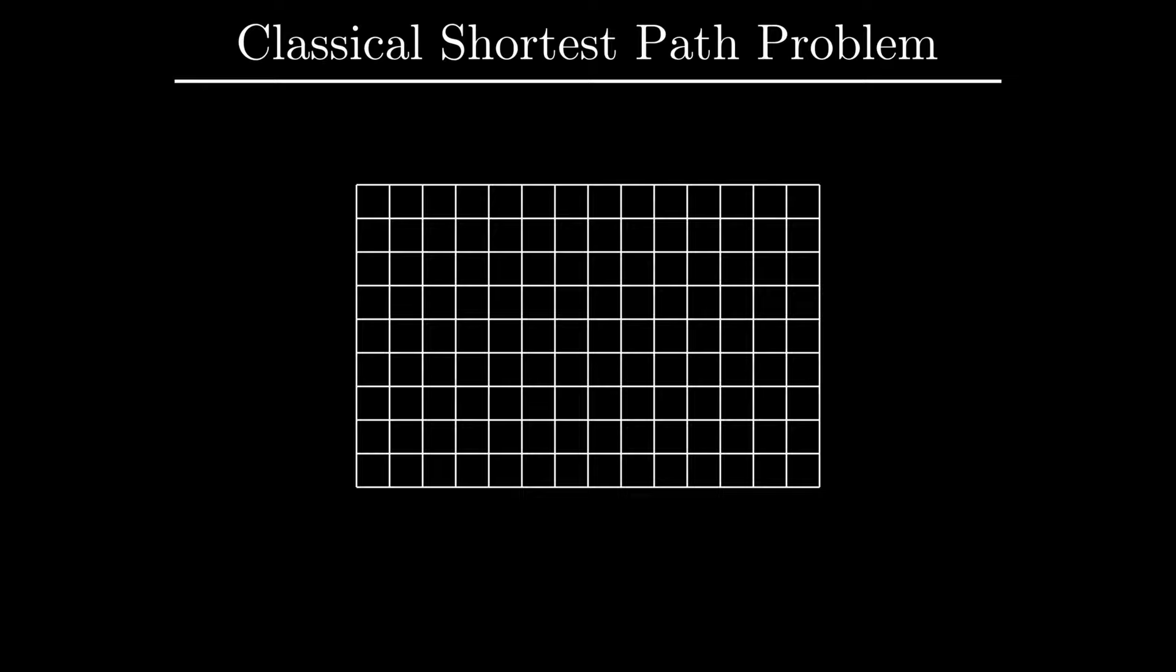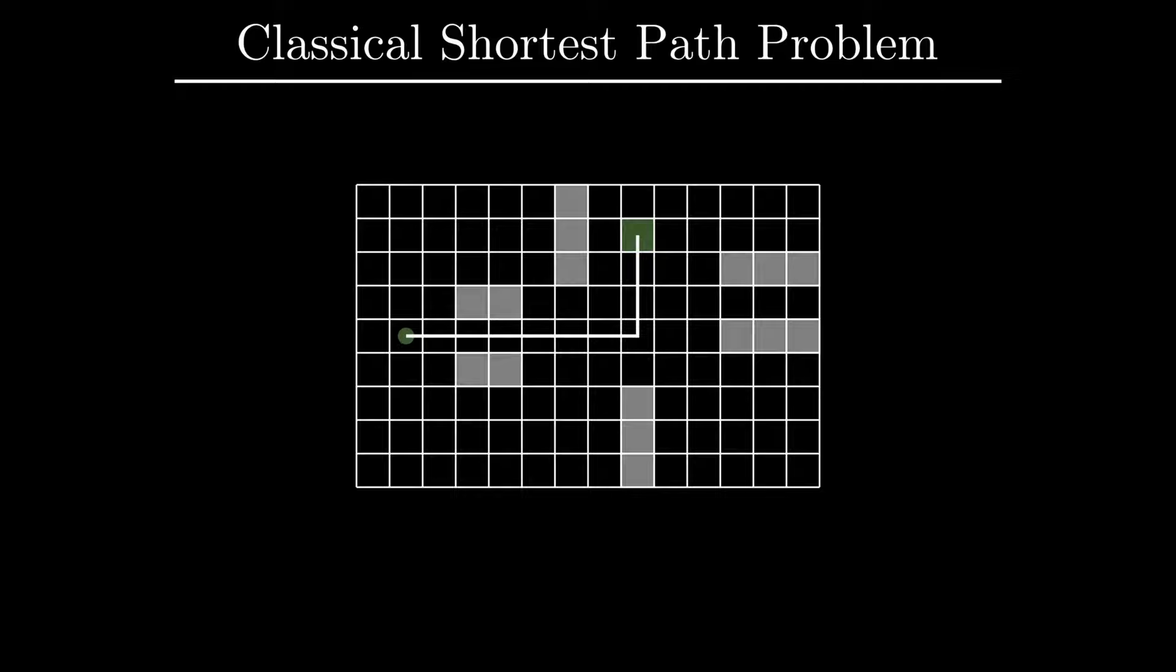Let us begin with the classical shortest path problem. Consider a grid where some cells are free and others are blocked. These are marked in gray on the figure. Suppose we have a robot that can move from cell to cell in either of the four directions, and we have a goal cell that the robot needs to reach. Finding a shortest path from the robot's current position to the goal is an instance of the shortest path problem.